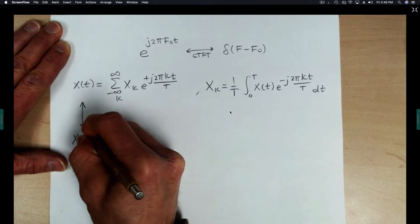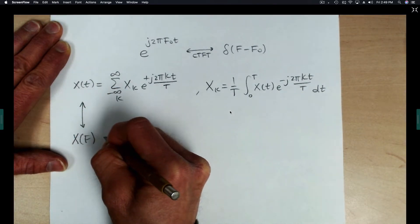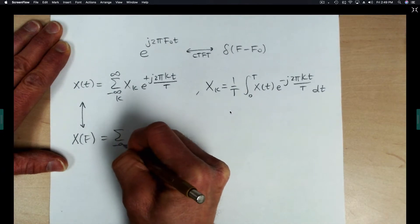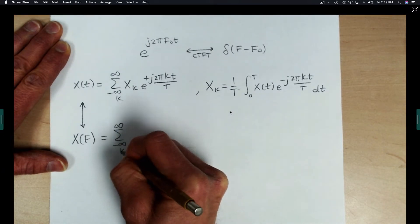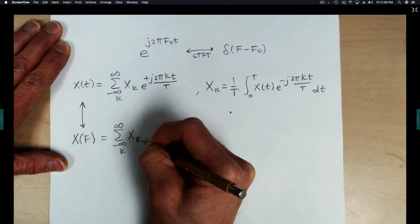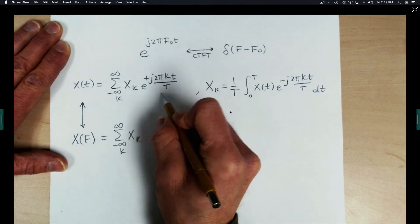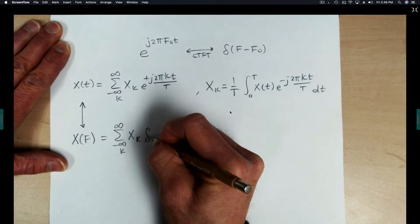So x of t becomes x of f. The Fourier transform is linear, so the summation comes through and the coefficients come through. And then the Fourier transform of the complex exponential is a delta function.